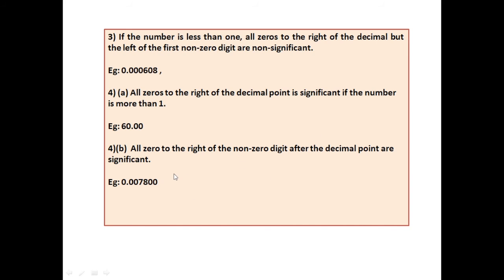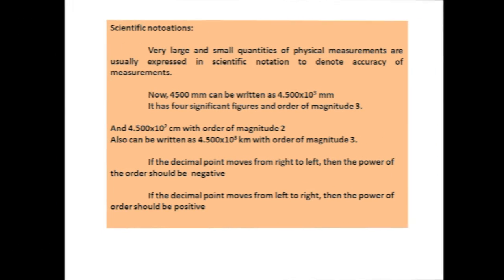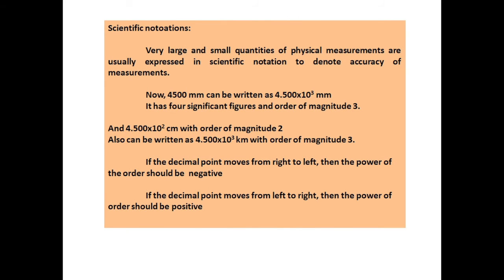Scientific notations: Very large and small quantities of physical measurements are usually expressed in scientific notation to denote accuracy of measurements. Now, 4500 mm can be written as 4.500 × 10³ mm. It has 4 significant figures and order of magnitude 3. And 4.500 × 10² cm with order of magnitude 2, and 4.500 × 10³ km with order of magnitude 3.